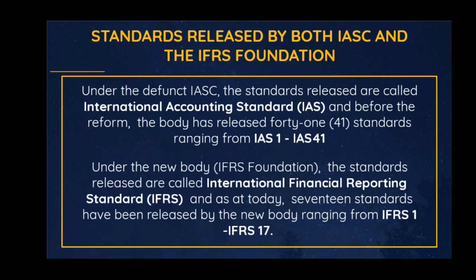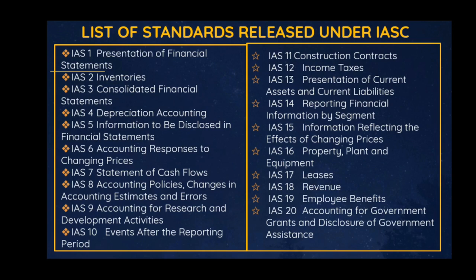After the new body emerged under the IFRS Foundation, the standards being released came to be called International Financial Reporting Standards (IFRS), while the former IAS standards still remain as IAS but are subject to review or replacement. Under IFRS, the total number of standards released by the IFRS Foundation is 17, ranging from IFRS 1, IFRS 2, IFRS 3, down to IFRS 17.